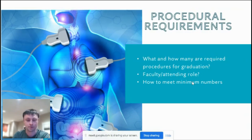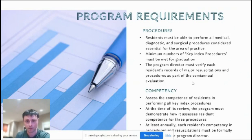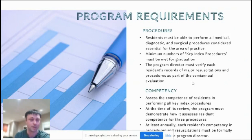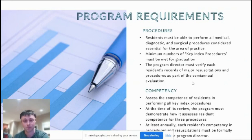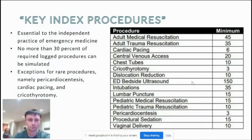This language is pretty much straight quotation from the ACGME. Not only do residents have to meet the minimum number of procedures, they have to be able to perform all the medical, diagnostic, and surgical procedures and meet the minimum numbers of what are called key index procedures. The program director has to verify records of all resuscitations and procedures as part of a semi-annual evaluation. In addition to meeting the numbers, we also have to assess competency — not just that they've done 35 intubations, but that they're doing them correctly, and the program director formally signs off on all of this.